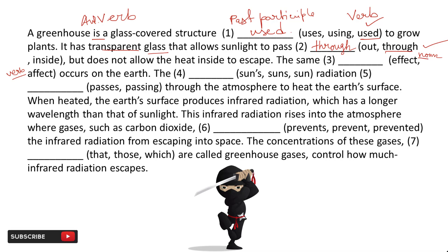Next blank: 'The [blank] radiation.' The options are: sun, suns, sun's. 'Suns' means there are many suns — that is wrong. When you are referring to something belonging to the sun, you use the apostrophe — that's basic English. So 'sun's' (S-U-N apostrophe S) is the correct answer here.